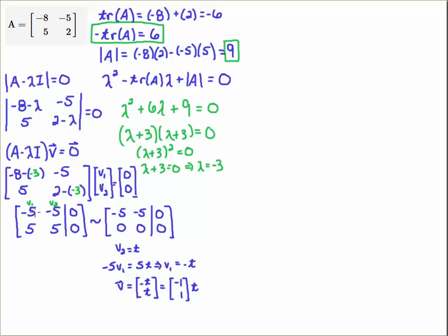If you just do the row operation, just add the first row to the second row, you get this system here. You see that v2 is going to be a free variable. And then that means that v1 will equal minus t.